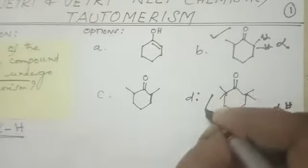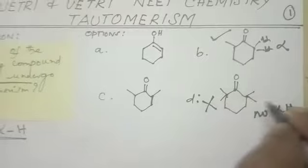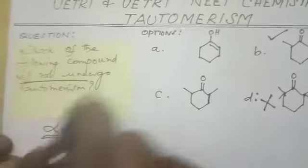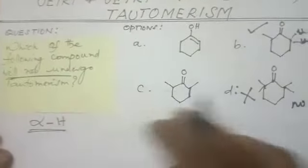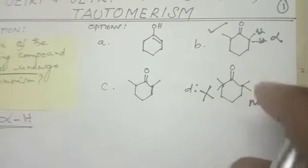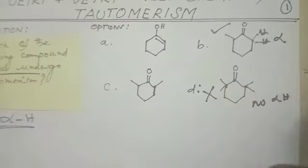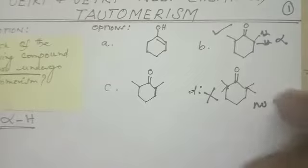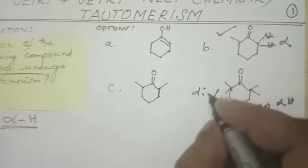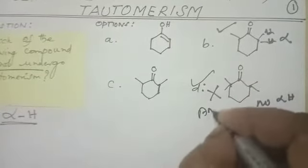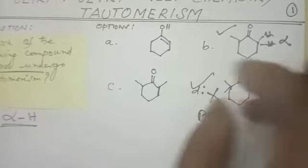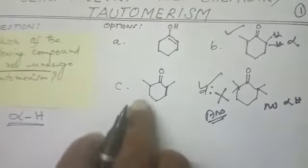In another compound, both places alpha hydrogen is not available — no alpha hydrogen — so it is not able to undergo Tautomerism. They are asking which will not undergo Tautomerism, so this compound with no alpha hydrogen is not answering. This is your answer.